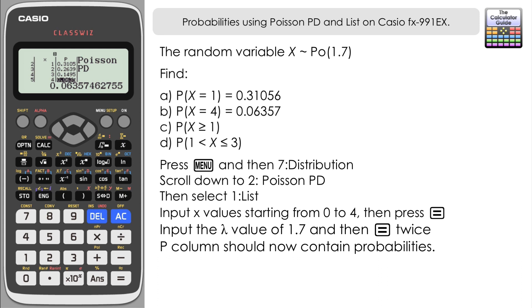Part c and d are going to require a little bit more work. Part c says what is the probability of X being greater than or equal to 1. Well let's think about this. If X is 1 or more, then essentially that's the same probability as 1 minus the probability of X equaling 0 because we have a discrete distribution. So if I find the probability of X equals 0 and subtract that from 1, then I've got the probability of X is greater than or equal to 1.